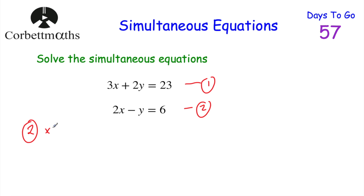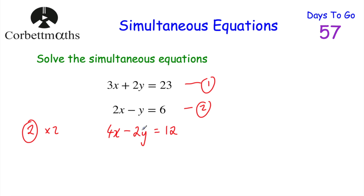I'm going to double this equation — multiply everything by 2. 2x times 2 is 4x. Minus y times 2 is minus 2y. And 6 times 2 is 12. So doubling the bottom equation gives us 4x − 2y = 12. This new equation has minus 2y, and our top equation 1 has 2y — and minus 2y plus 2y equals 0, so the y's will cancel out and we'll eliminate them.